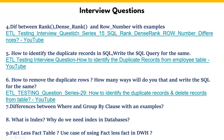Now the fourth question: the difference between RANK, DENSE_RANK and ROW_NUMBER. If you go to the SQL playlist in the interview question series, the 15th question covers this — I have already explained it, and I will provide the link in the description. The next question is how to identify duplicate records and write a SQL query for the same.